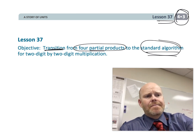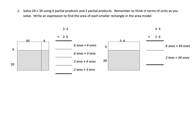We have two instances of the same problem. On one side we have the partial products from the area model with four partial products shown vertically, and on the other side we have the same problem — 26 times 34 — shown as two partial products. This is where it starts to look a lot like the standard algorithm.